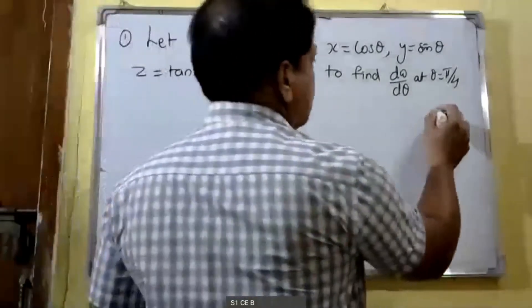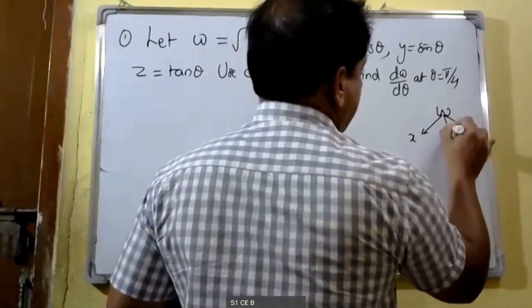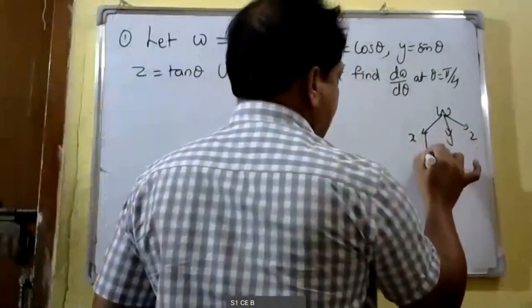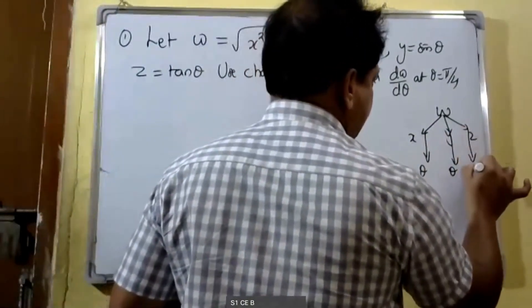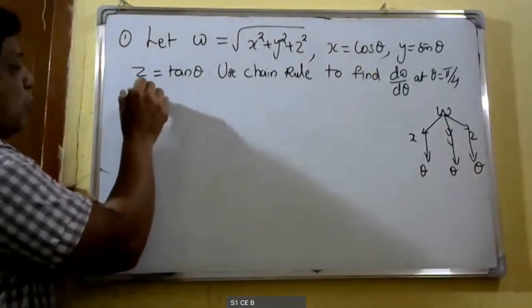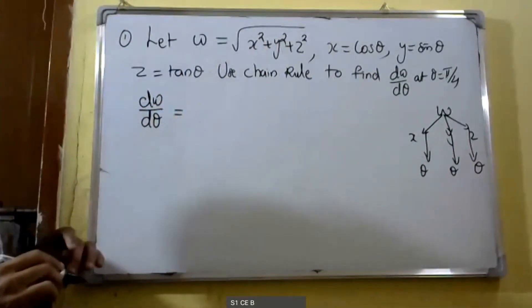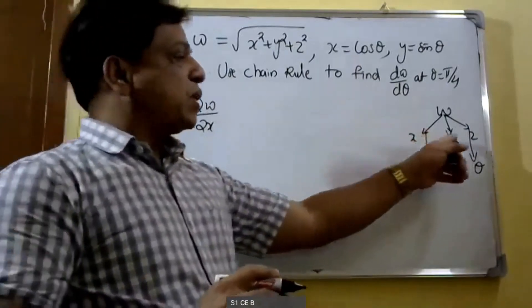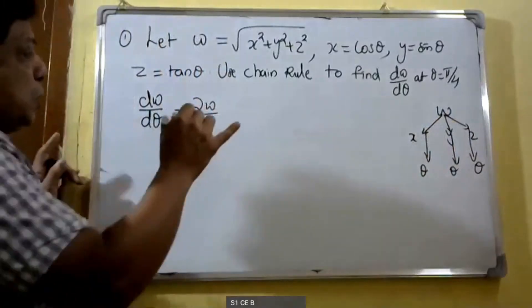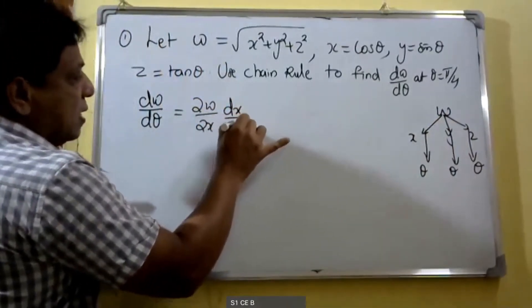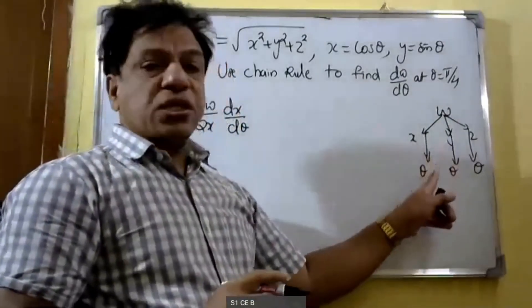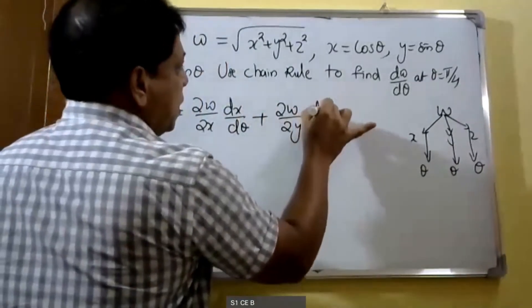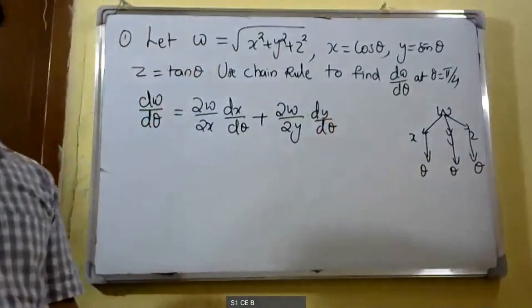In this case w is a function of x, y and z. x is a function of θ, y is a function of θ, and z is a function of θ. Therefore to find dw/dθ we use the chain rule result: dw/dθ = (∂w/∂x)(dx/dθ) + (∂w/∂y)(dy/dθ) + (∂w/∂z)(dz/dθ).